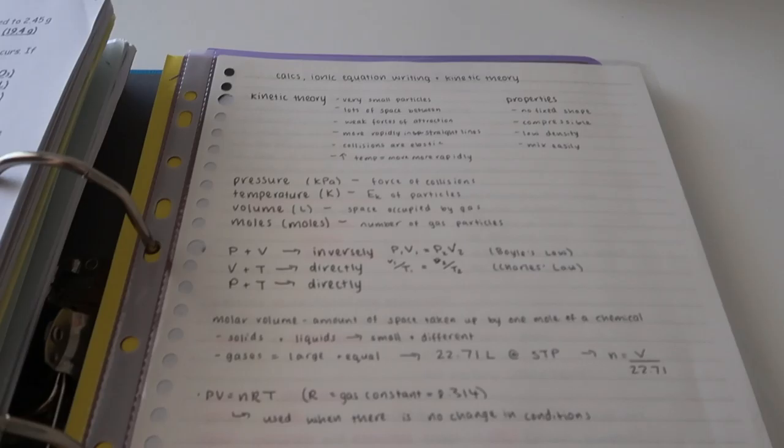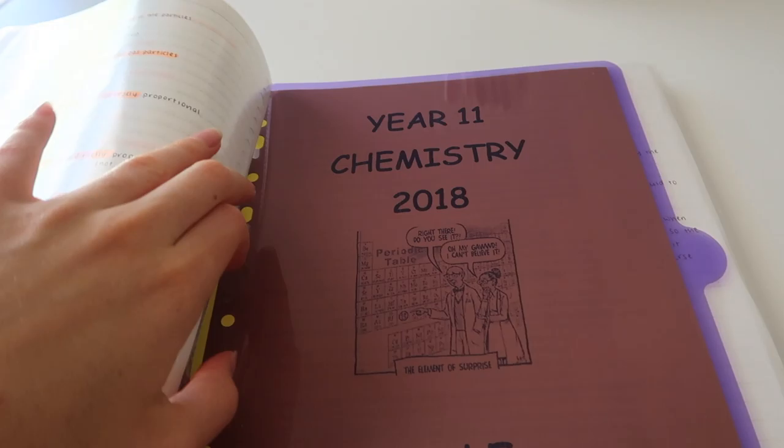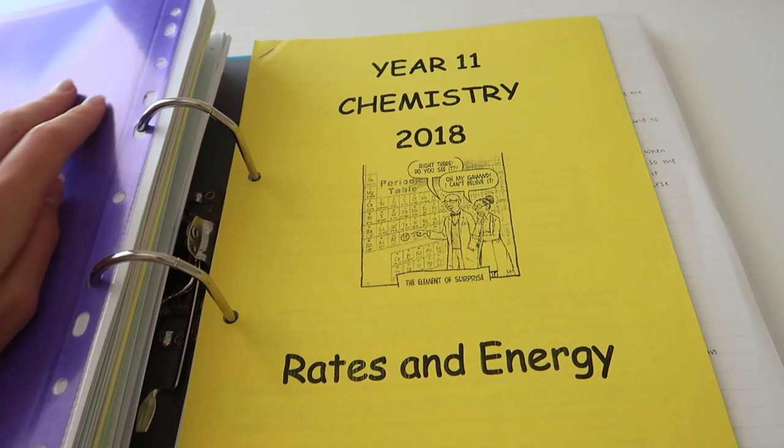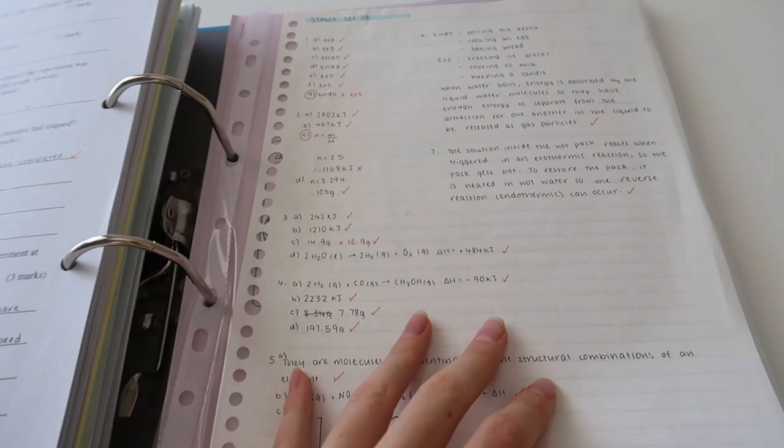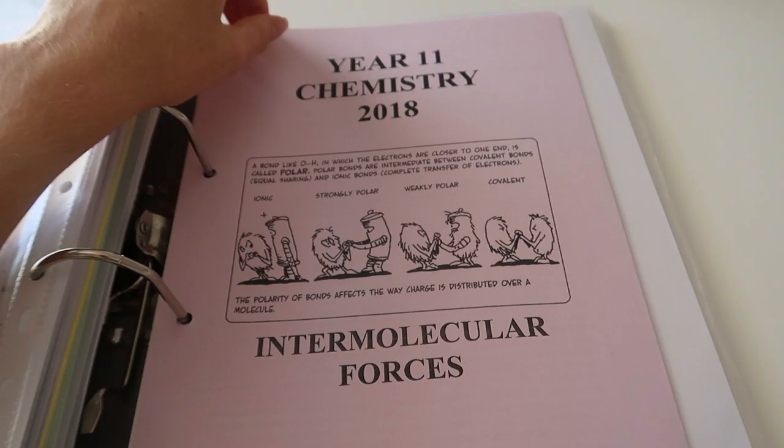And then all of my class notes in there as well. And then here's a new topic. So you're seeing a pattern obviously, we have divider, we have the topic booklet, we have the revision pack and we have the class notes. And then I ran out of dividers, so I just stopped using them.